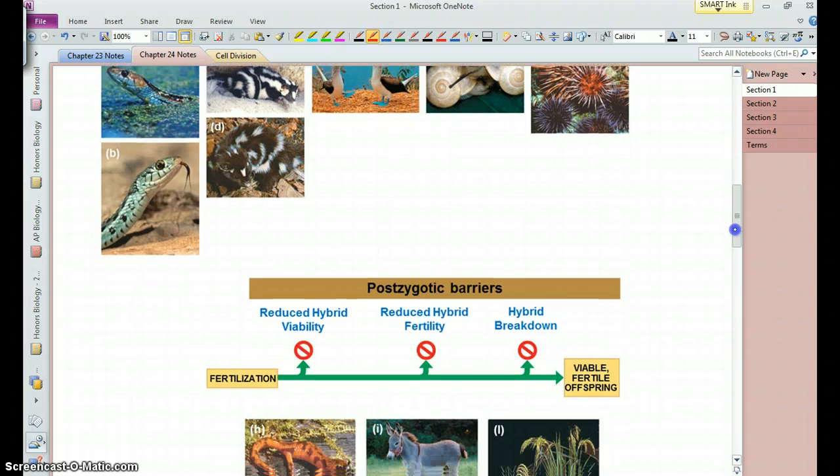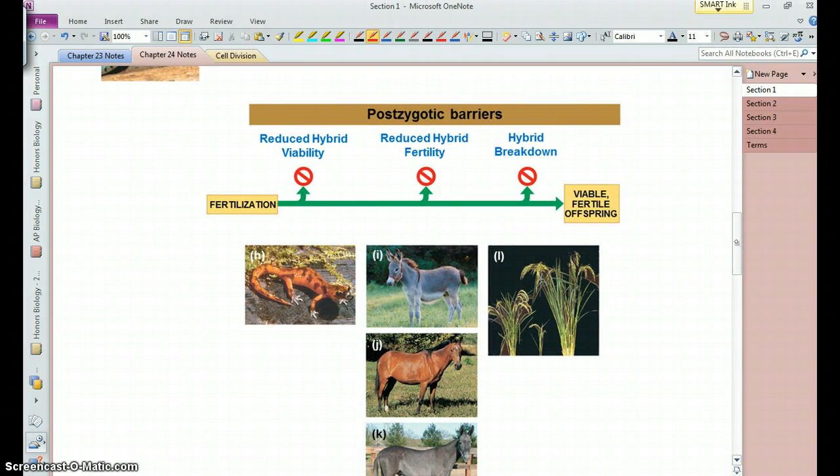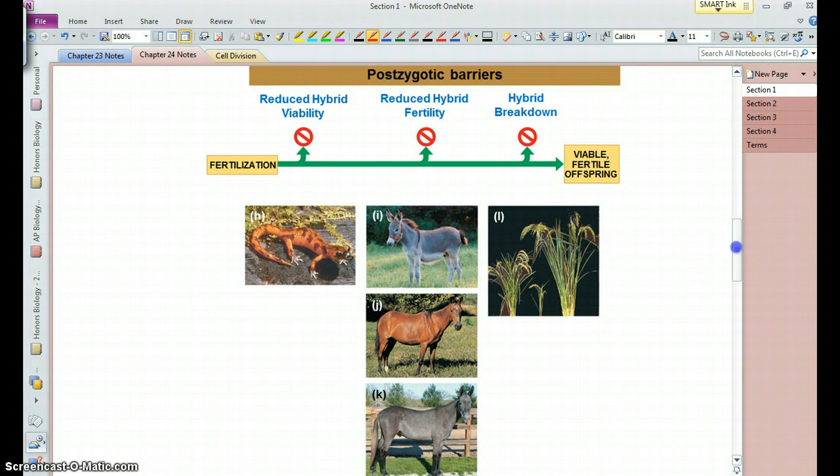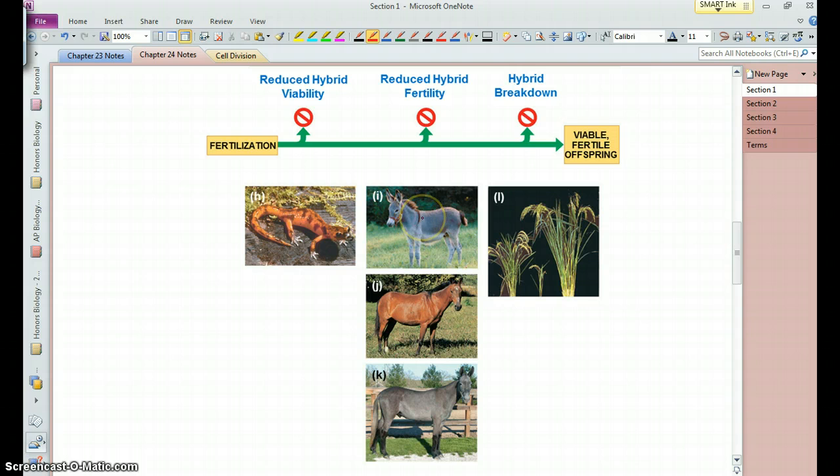So all those are prezygotic. Postzygotic, so you may have successful mating, and you might have the formation of a hybrid, but in some cases, the hybrids are not terribly viable, they just don't survive very well. In other cases, the hybrids are of low fertility, or essentially no fertility, so as the case with the mule, the mule is a hybrid between a donkey and a horse, but mules are sterile, so essentially, even though they form a hybrid, that hybrid is a dead end, so we consider mules and horses separate species.